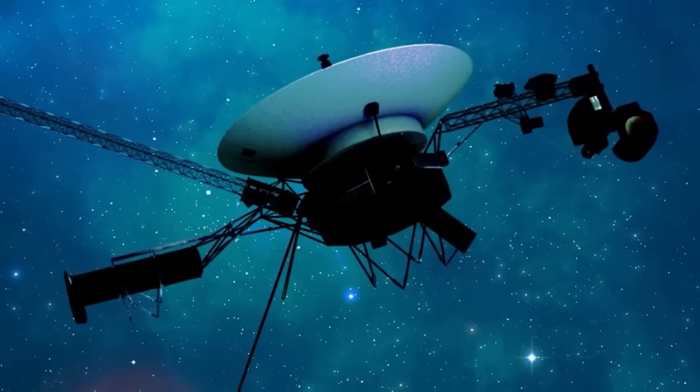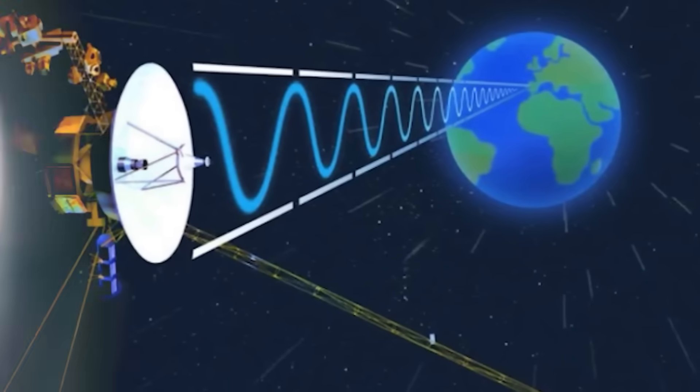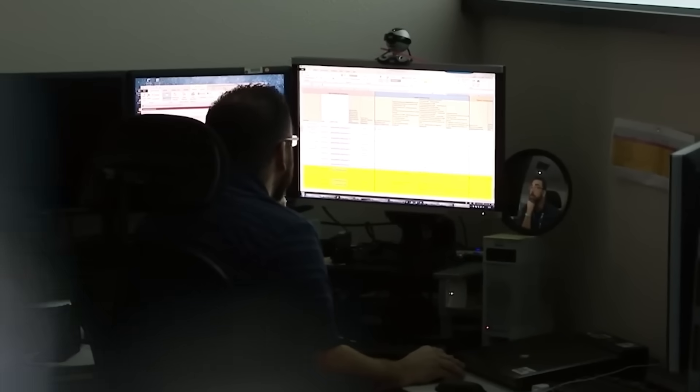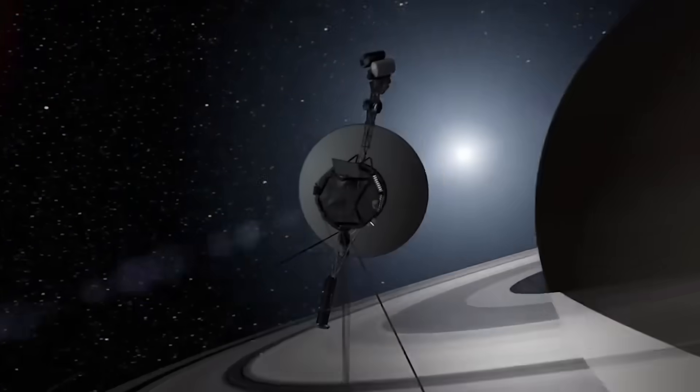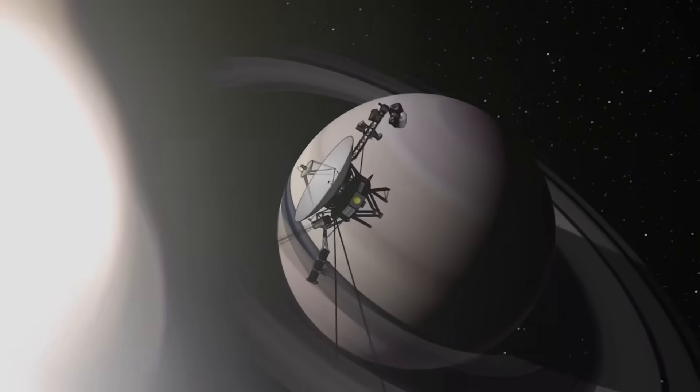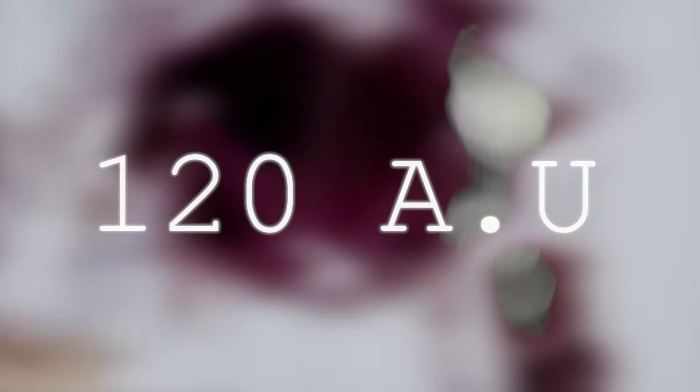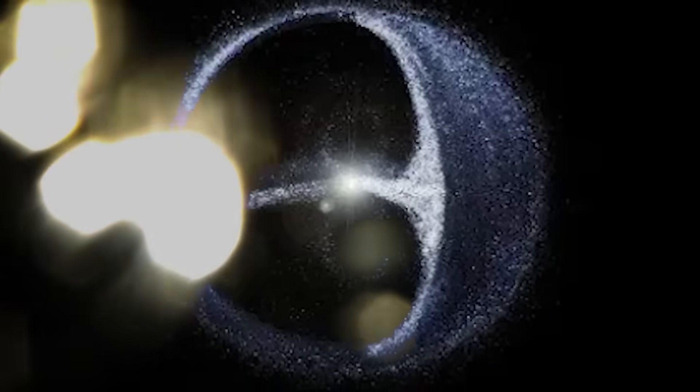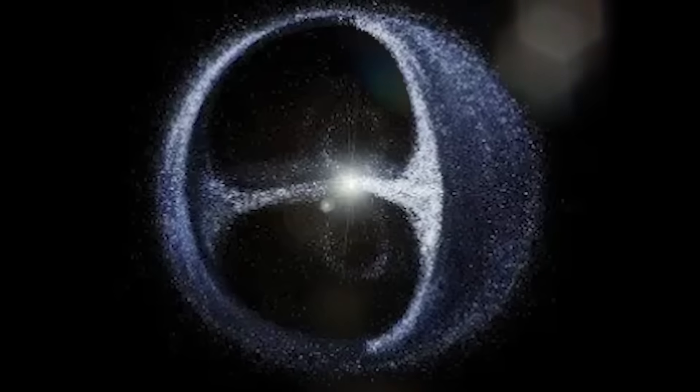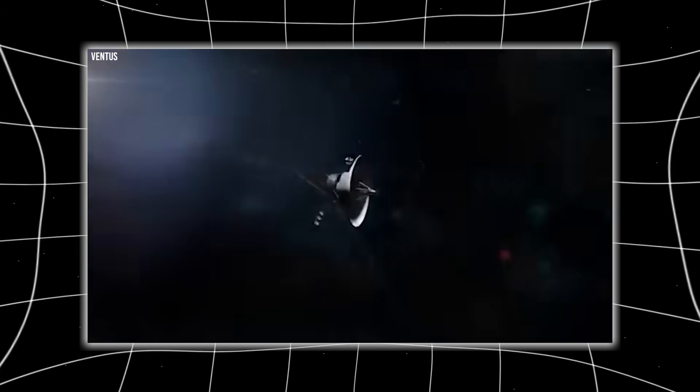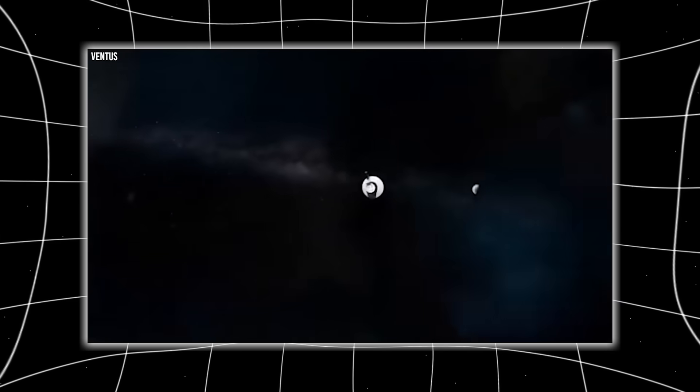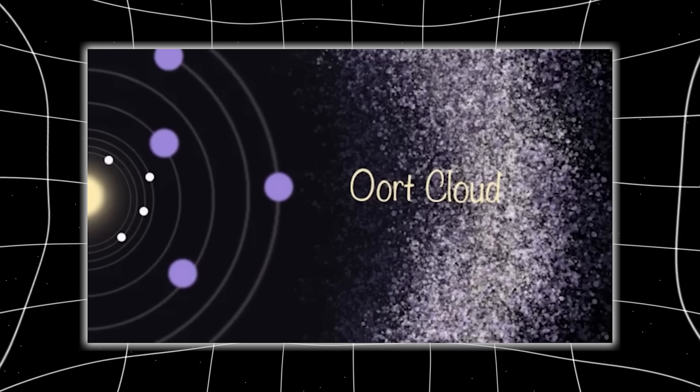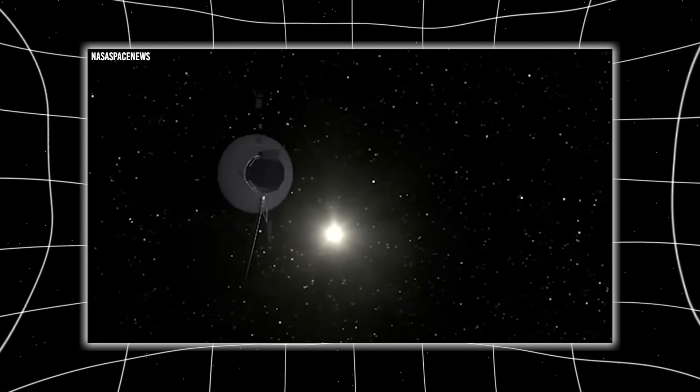For years, scientists believed in the heliopause, a boundary where our sun's influence ends and the galaxy truly begins. Voyager 1 crossed it in 2012, at a distance of 120 astronomical units from Earth. But when it did, something unexpected happened. The magnetic field didn't change. The particle density rose, but the field's direction remained strangely consistent. That shouldn't have happened. Voyager 2, years later, experienced the same.